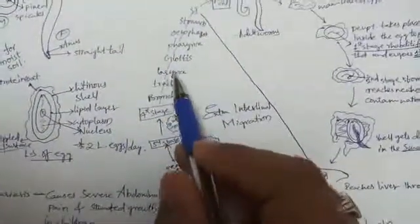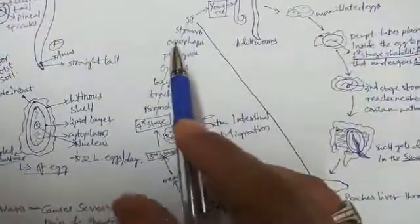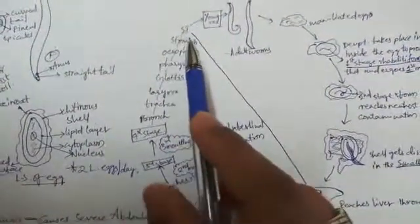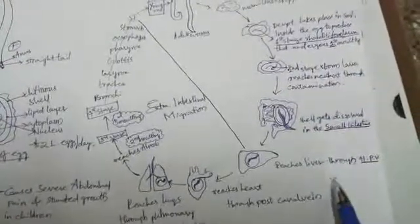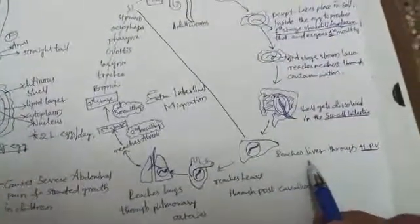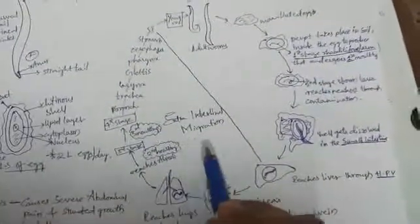It migrates to bronchi, trachea, larynx, glottis, then pharynx to esophagus to stomach and later small intestine. From liver to small intestine, this is called extra-intestinal migration.